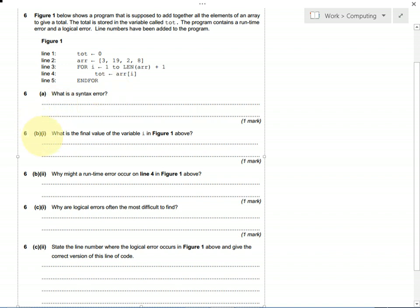For 6B part 1, what is the final value of variable i in this code? So let's have a look. We've got two variables: tot, which presumably stands for total, which is set to zero at the beginning.